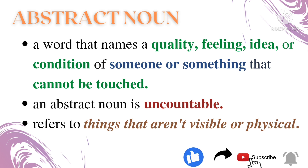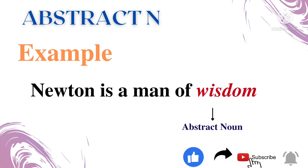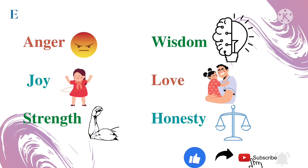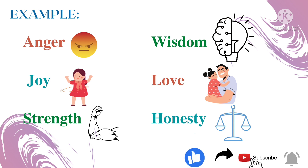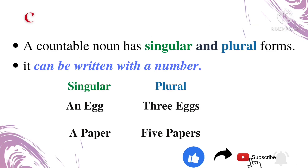Let's move to abstract noun. An abstract noun is a word that names a quality, feeling, idea, or condition of someone or something that cannot be touched. An abstract noun is uncountable. These are words that refer to things that aren't visible or physical. For example: 'Newton is a man of wisdom' — here the word 'wisdom' is the abstract noun. Other examples: anger, joy, strength, wisdom, love, honesty. All these nouns are not visible or physical.